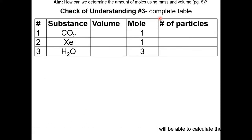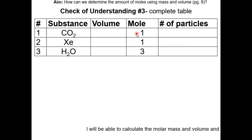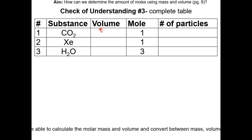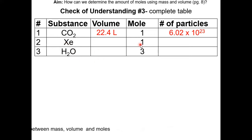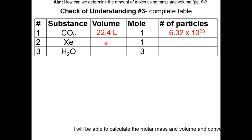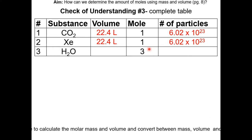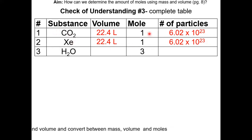Check of understanding number 3: complete the table, assuming these substances are ideal gases under STP. If we have one mole of CO2, the volume is 22.4 liters — that's the conversion factor. The number of particles is 6.02 × 10²³. Xenon also has one mole, so it occupies the same space as CO2: 22.4 liters and 6.02 × 10²³ particles. This makes sense because both CO2 and xenon have the same number of moles, so they have the same number of particles and occupy the same volume.